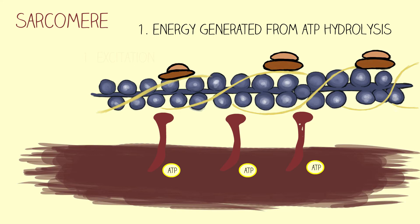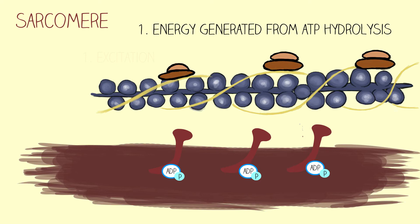This is because, following the previous contraction, the myosin heads bound ATP, which then quickly was hydrolyzed by the binding site ATPase, which is an enzyme. By breaking the phosphate bonds of ATP, myosin becomes energized with an ADP and a free phosphate attached.